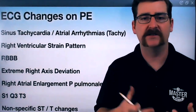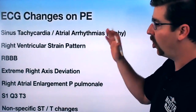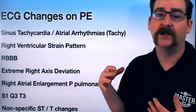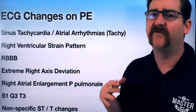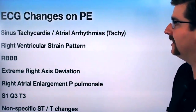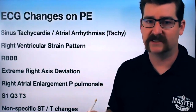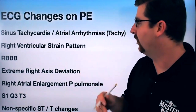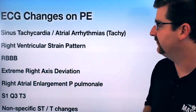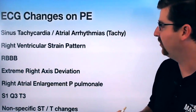EKG changes we might see on a pulmonary embolism — and this isn't all of them, these are some of the bigger ones: sinus tachycardia or atrial arrhythmias, happening in 40-plus percent of PEs; right ventricular strain pattern, which is very specific but not very sensitive; right bundle branch block; right axis deviation, specifically extreme right axis; and right atrial enlargement.